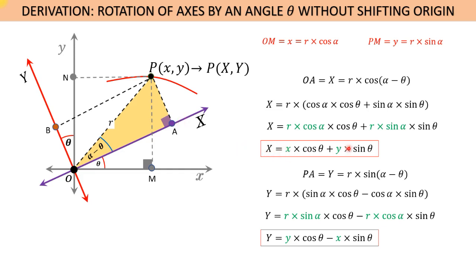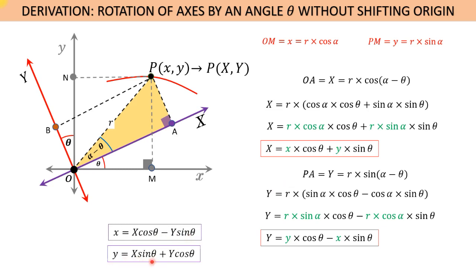From these two equations we can find the value of small x and small y. Small x equals X·cos(theta) minus Y·sin(theta), and small y equals X·sin(theta) plus Y·cos(theta).